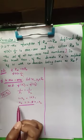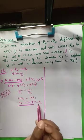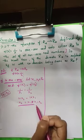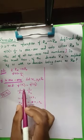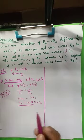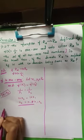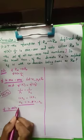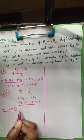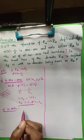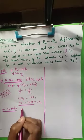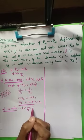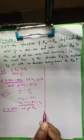Another way to show one-one is to assume the elements are different and show their images are also different. Now, how do we show f is onto? To show f is onto, we take some element y belonging to the co-domain set R*.